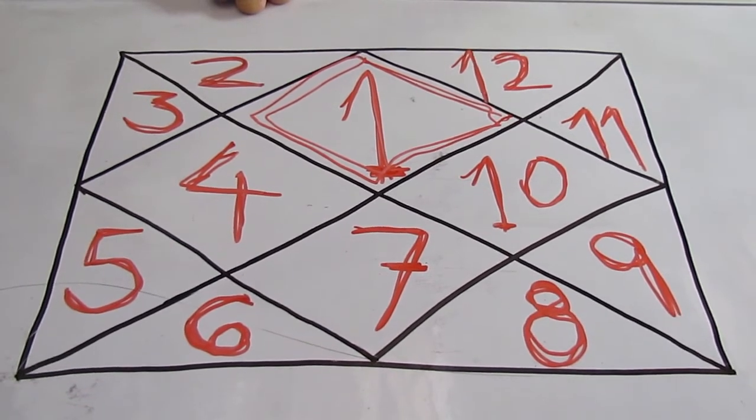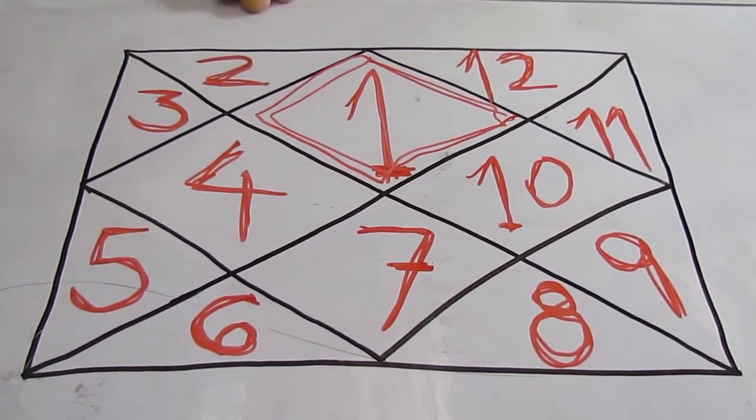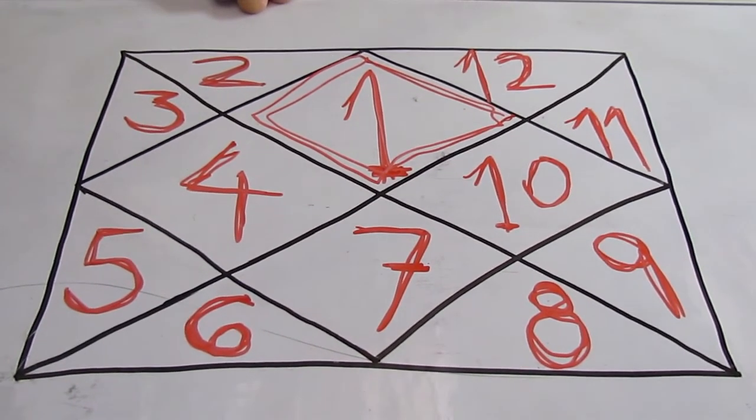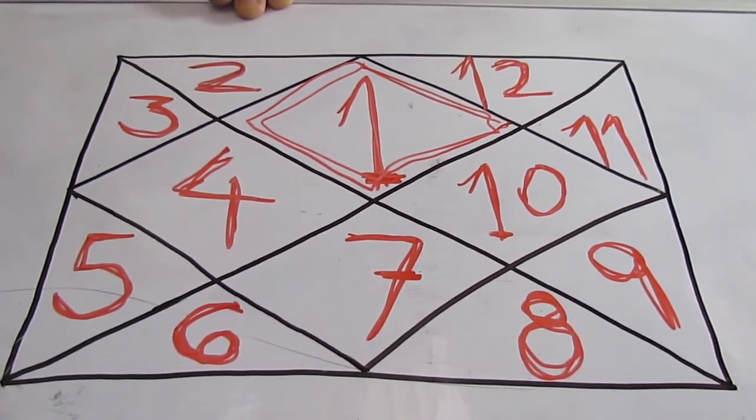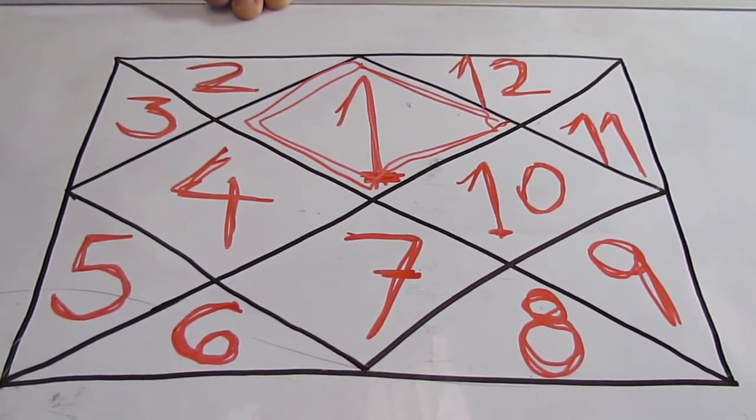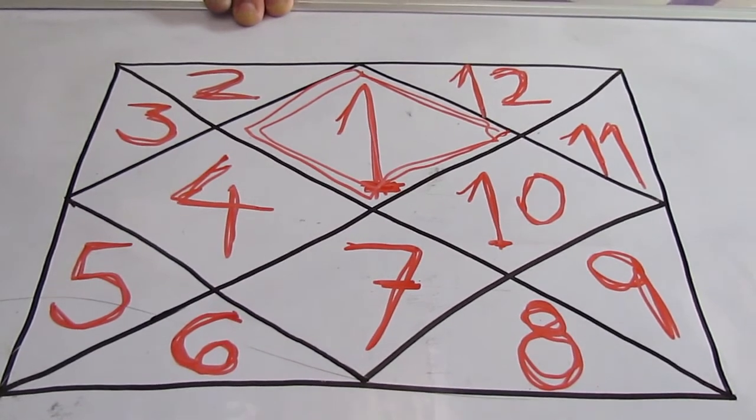Es por donde se pone el sol, es el oeste, donde descienden todas las constelaciones, todas las estrellas, todos los planetas. Salen por el este, se ponen por el oeste. El este representa la casa uno, el oeste representa la casa siete.